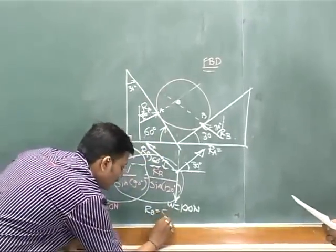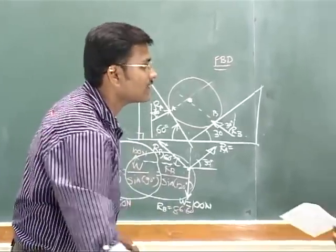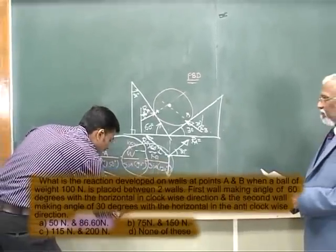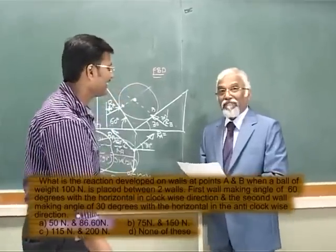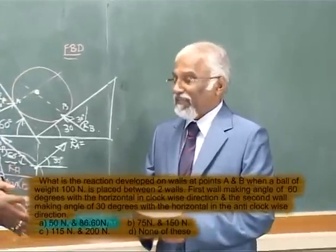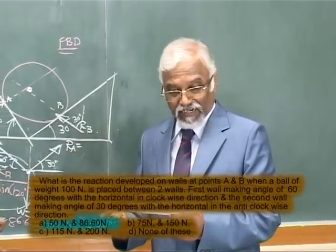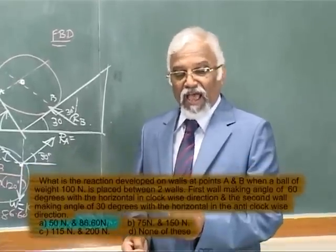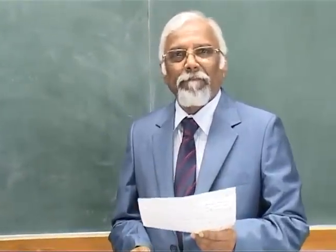Ra = 50 Newtons and Rb = 86.60 Newtons, so Option A is the correct answer. The answer is perfectly right, but the solution must be done much faster. Option A: 50N and 86.60N is confirmed.